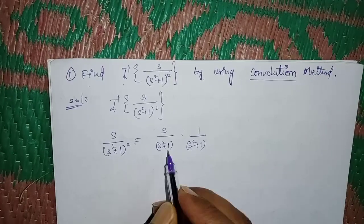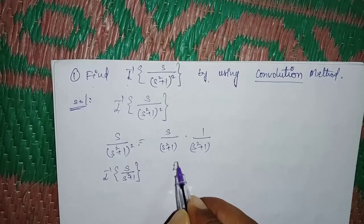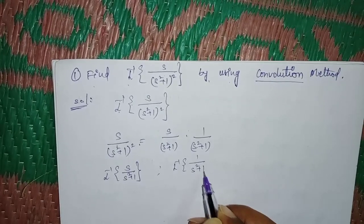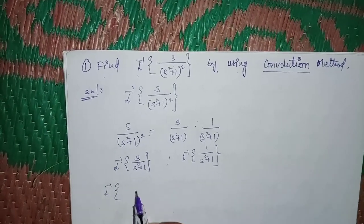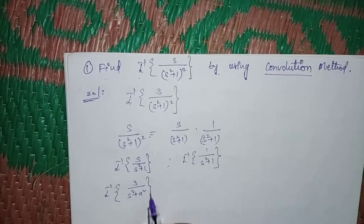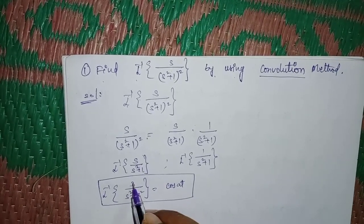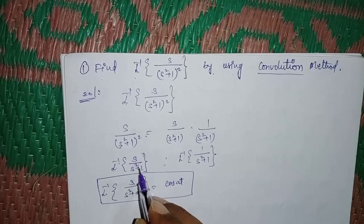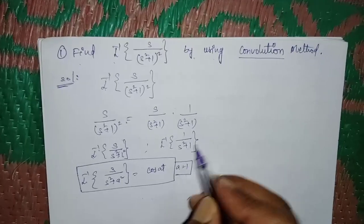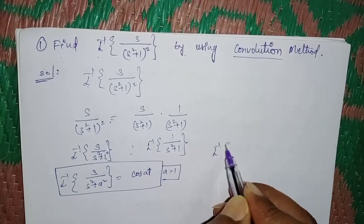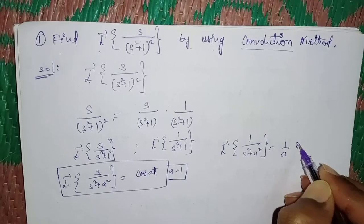Now apply the inverse Laplace to each factor. The first one is L⁻¹ of s/(s²+1), and the second one is L⁻¹ of 1/(s²+1). The formula gives L⁻¹ of s/(s²+a²) = cos(at). For the second, L⁻¹ of 1/(s²+a²) = (1/a)sin(at).